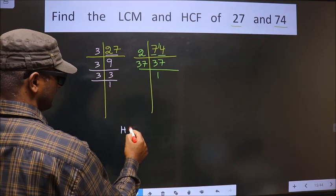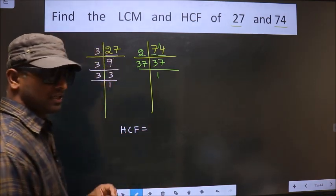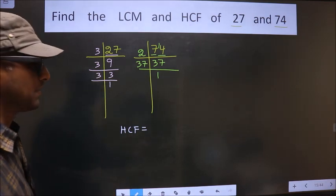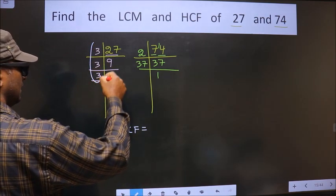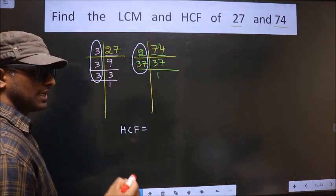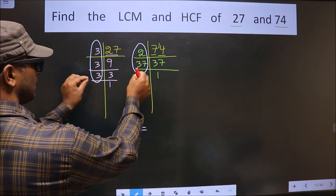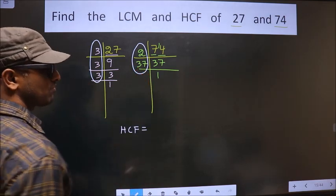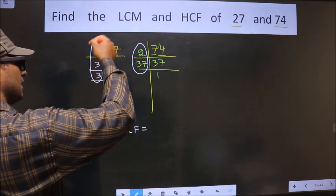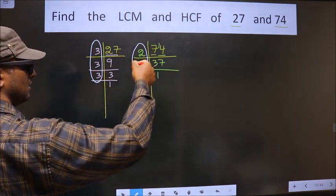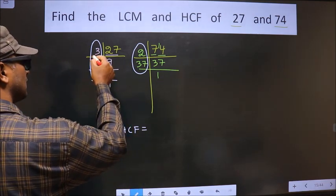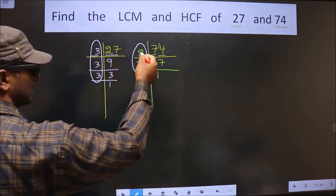So now our HCF is the product of numbers that are present in both factorizations. We should find the numbers that are present in both places. Let's start with 3. Do we have 3 in 74's factorization? No.